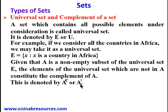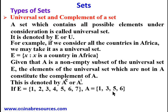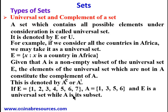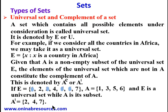The complement represents the set whose elements are in the universal set but not contained in A. For example, let E = {1, 2, 3, 4, 5, 6, 7} and A = {1, 3, 5, 6}. E is the universal set and A is its subset. To find A complement, we remove the elements of A from E: remove 1, 3, 5, 6 — what remains is {2, 4, 7}. So A' = {2, 4, 7}.